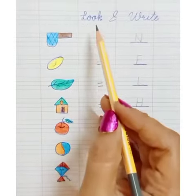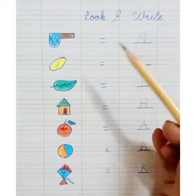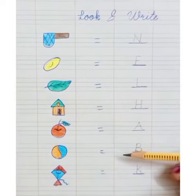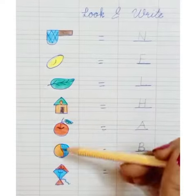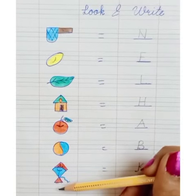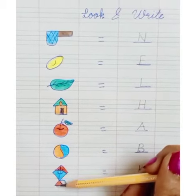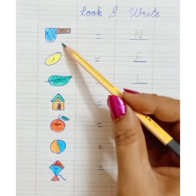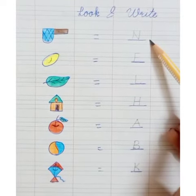Next page is Look and Write. यह भी आप बहुत बार practice कर चुके हो babies. So mama आपके लिए pictures बनाएंगे and you can fill colors. और आपको picture को देखके letter लिखना है.